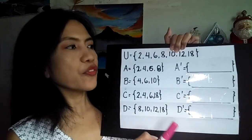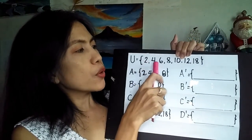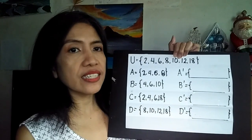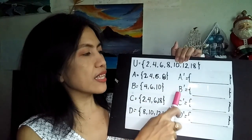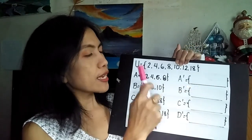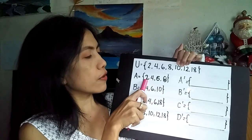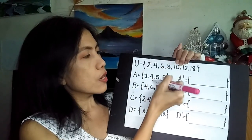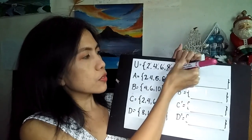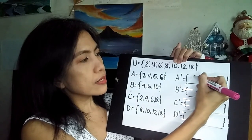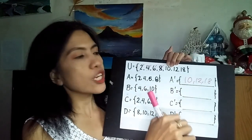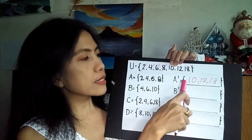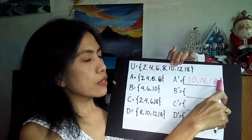Another drill. For the universal set, the given elements are 2, 4, 6, 8, 10, 12, and 18. And for set A, we have elements 2, 4, 6, and 8 — and we're looking for the A complement. So let's cross out 2, 4, 6, and 8. What is remaining is elements 10, 12, and 18. So therefore, the A complement for the given set is elements 10, 12, and 18.